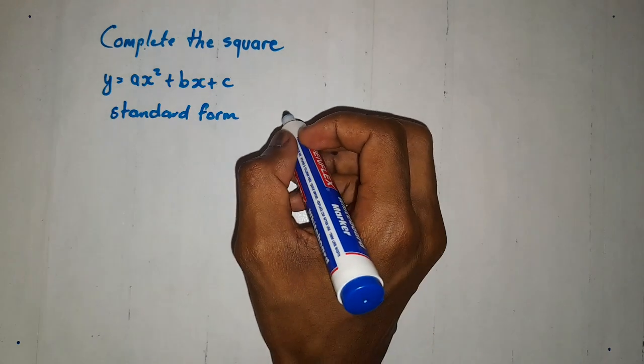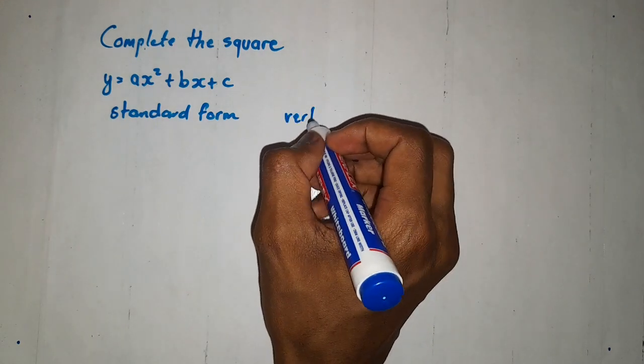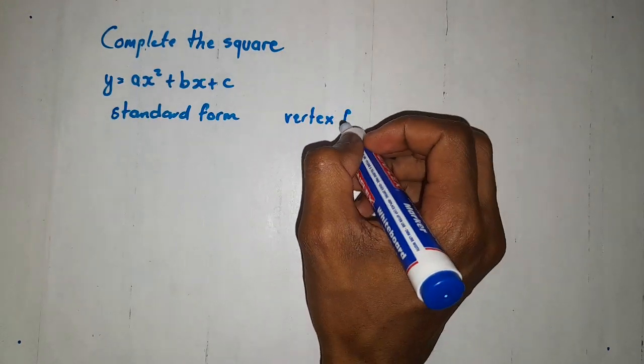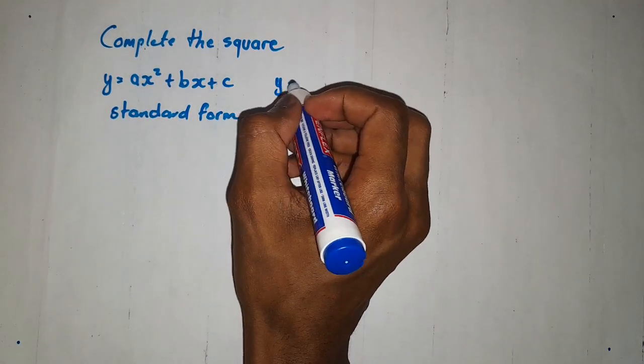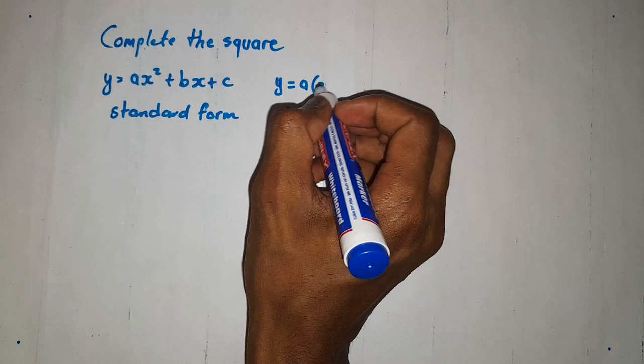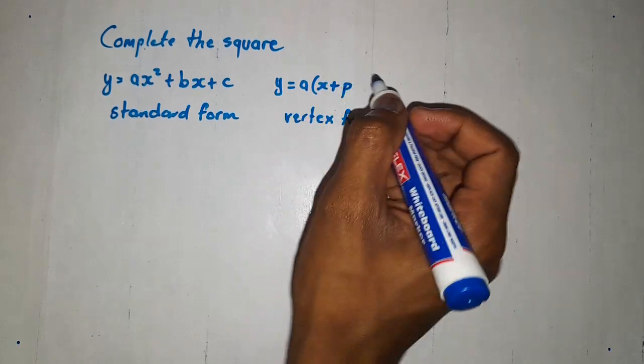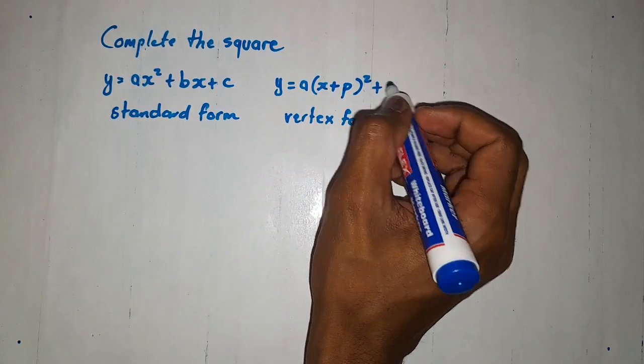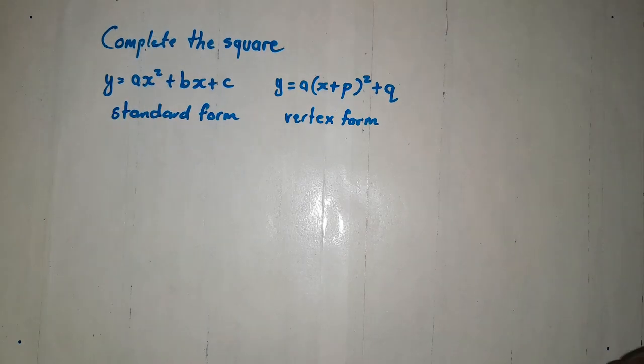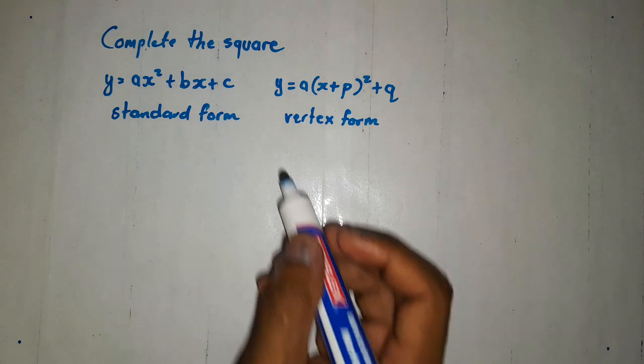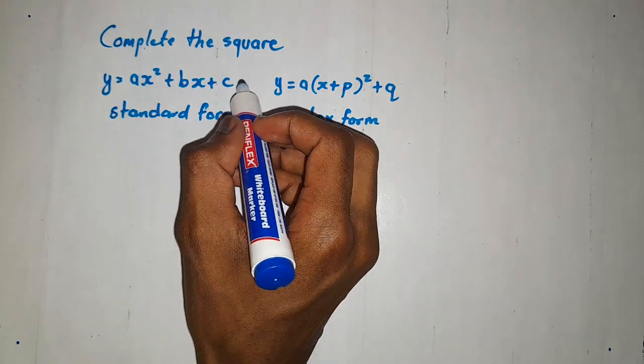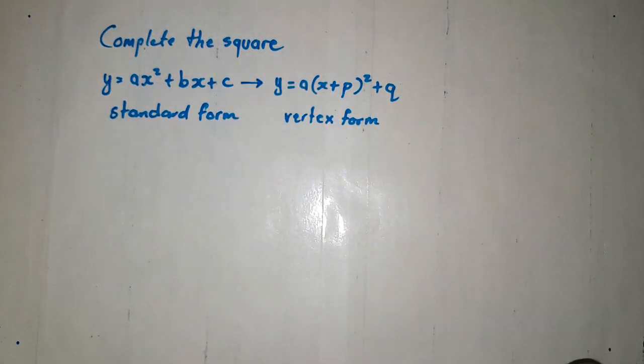And again, we also have the vertex form, which is given by y equals a times x plus p close bracket squared and we have q. The turning point format. And now, when completing the square, we are going to move from the standard form to the vertex form.